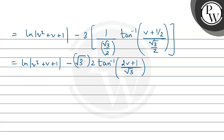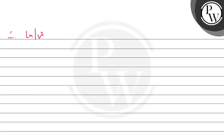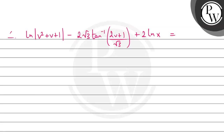Substituting the evaluated integrals back, we get: (1/2)[ln|v² + v + 1| minus 2√3 tan⁻¹((2v+1)/√3)] equals minus ln|x| plus c. Simplifying: ln|v² + v + 1| minus 2√3 tan⁻¹((2v+1)/√3) plus 2 ln|x| equals c.